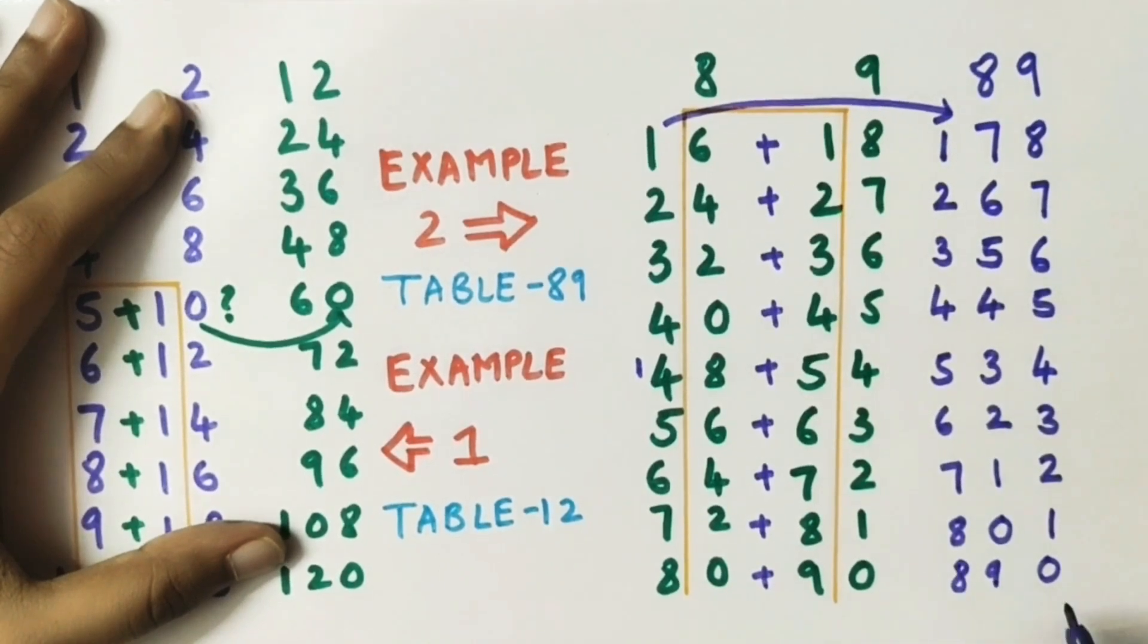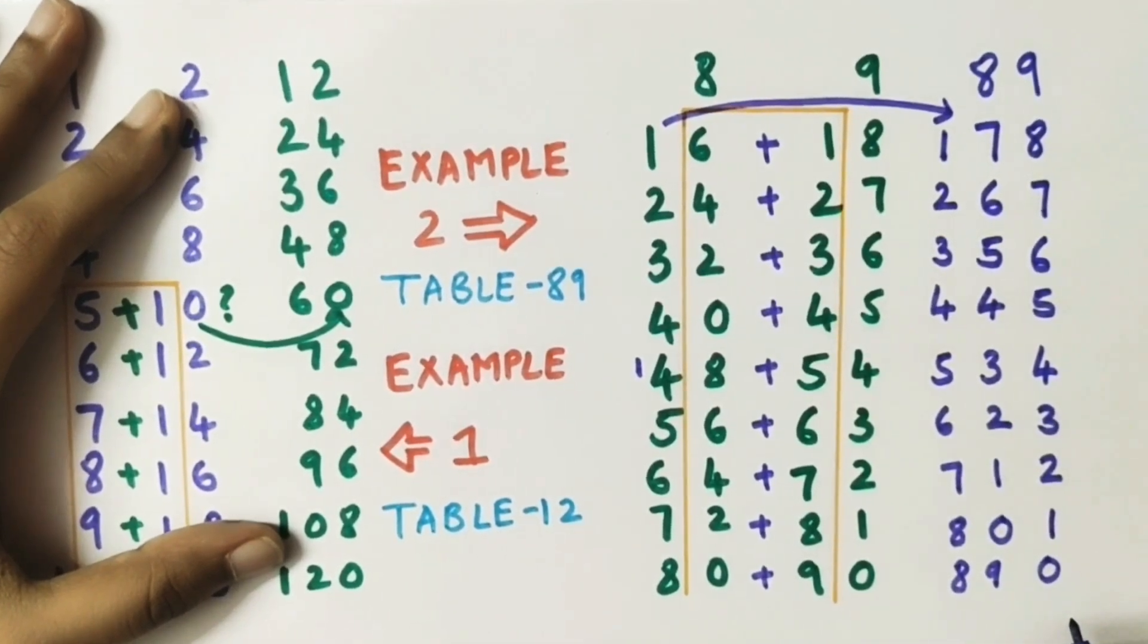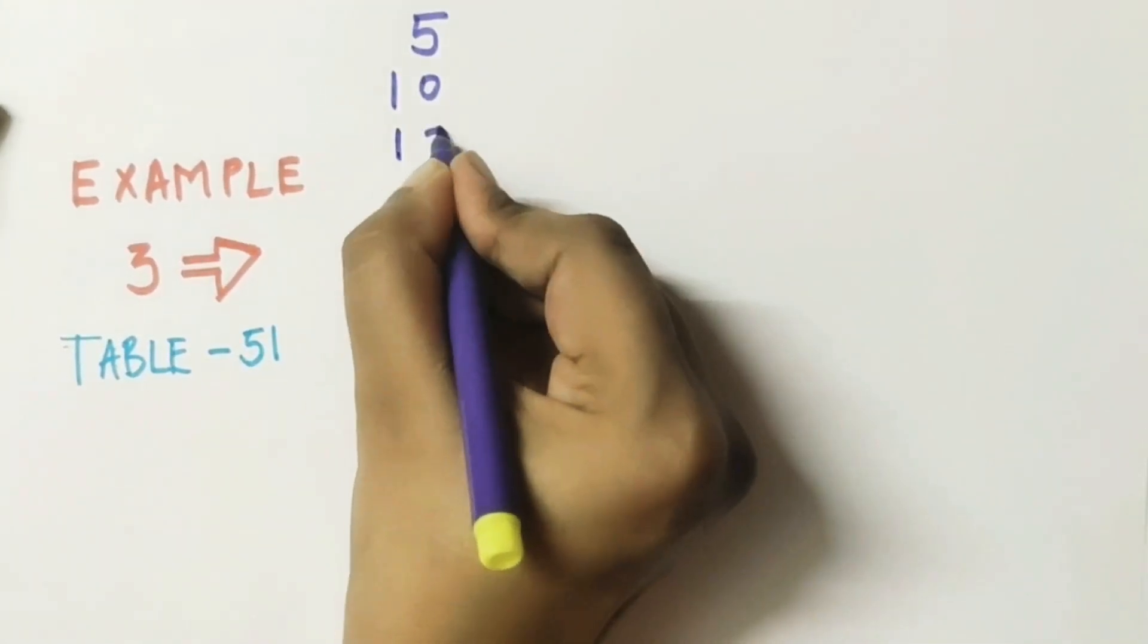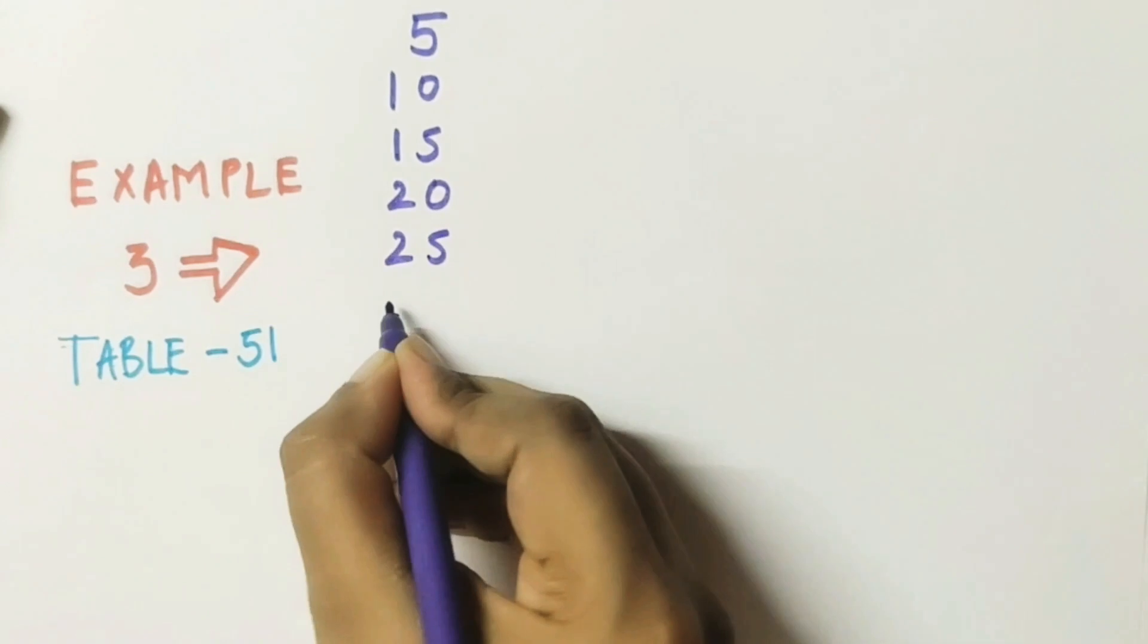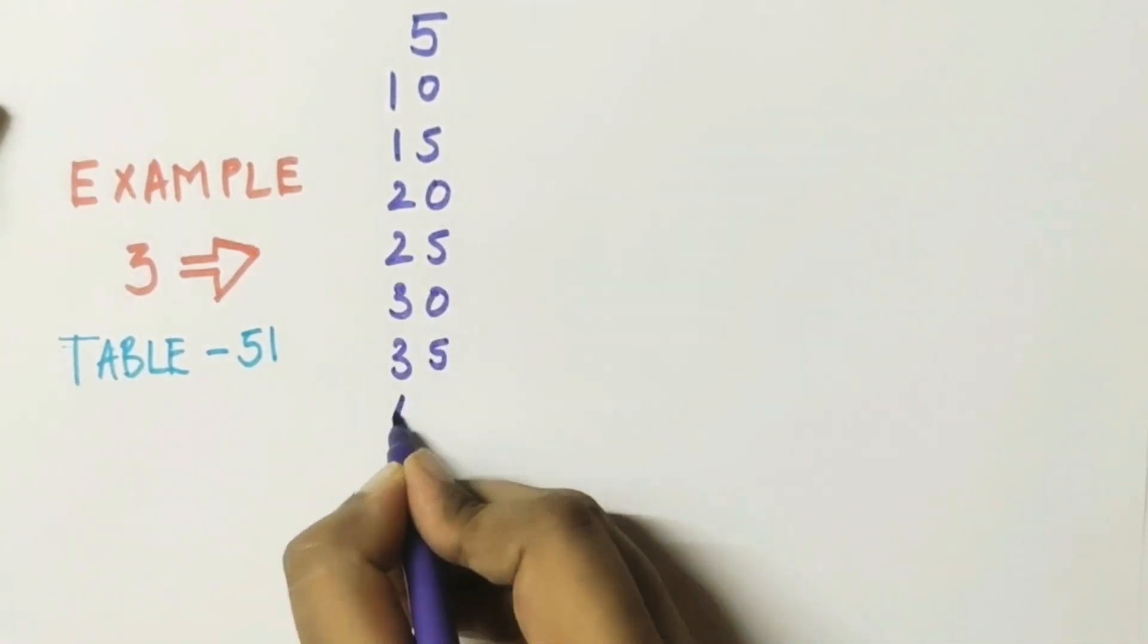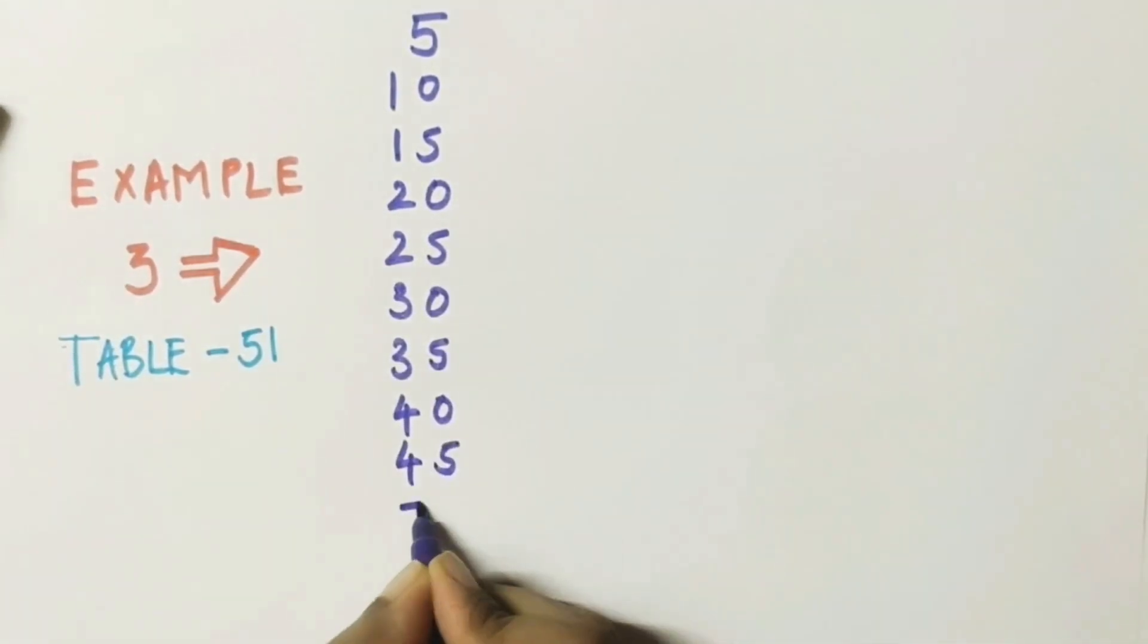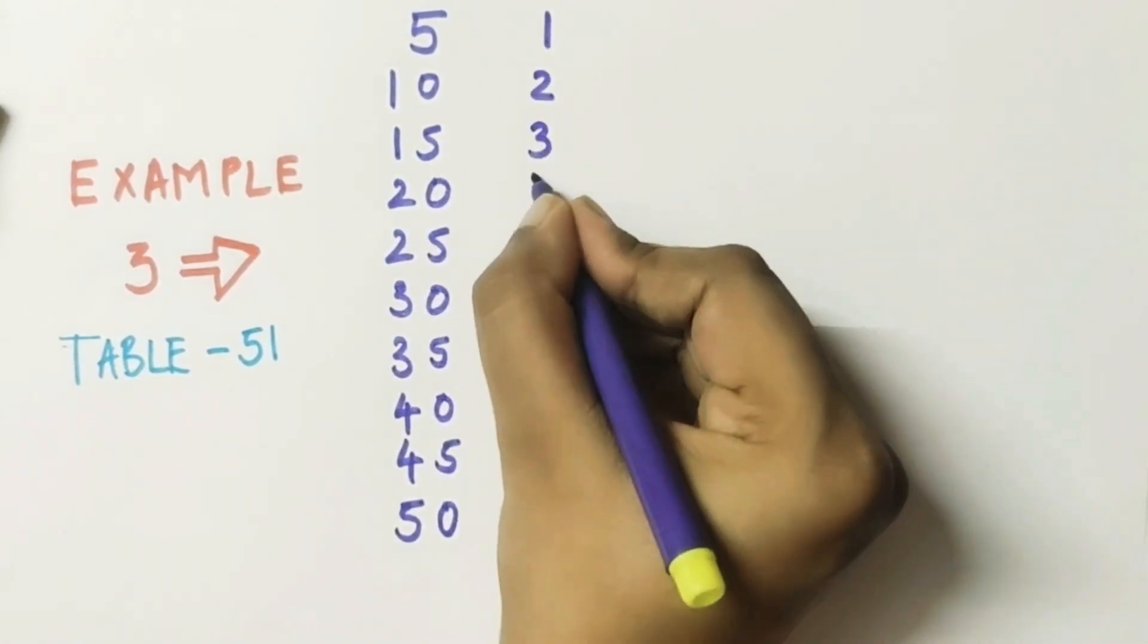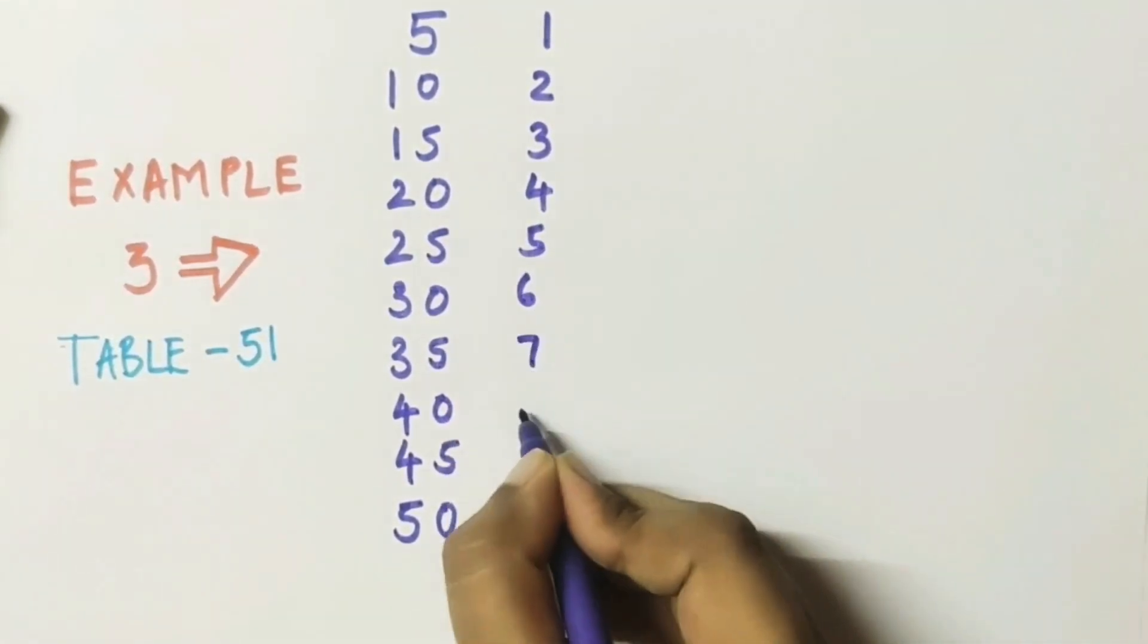Let's take the last example, example table of 51. So you already know that we will write table of 5 and then table of 1. But here again we are getting 3 numbers.